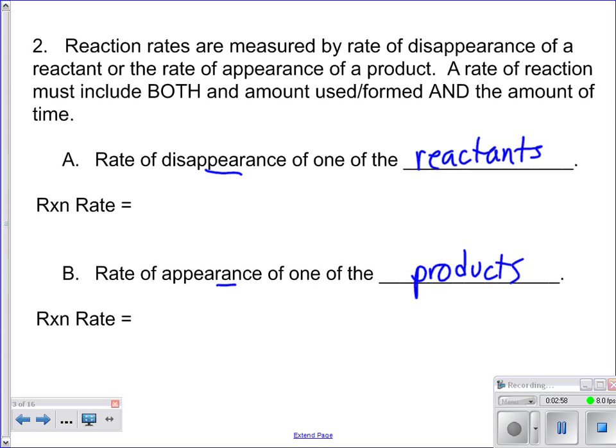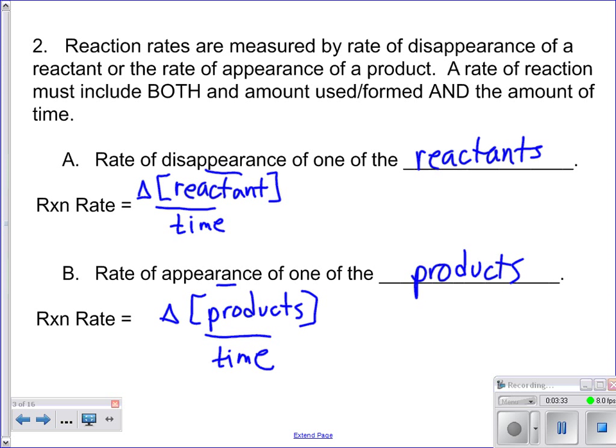So if you were to try and describe that maybe in a formula you would think that for your disappearance of a reactant you would think about the change in concentration of your reactant over time is what we're looking at. And here for appearance of one of your products you would think about it as the change in your product's concentration over time. And to be honest we probably should throw in a negative there for the first one, but you're going to have your reactants are going to decrease. Okay so again that's just showing you what a formula would look like there.